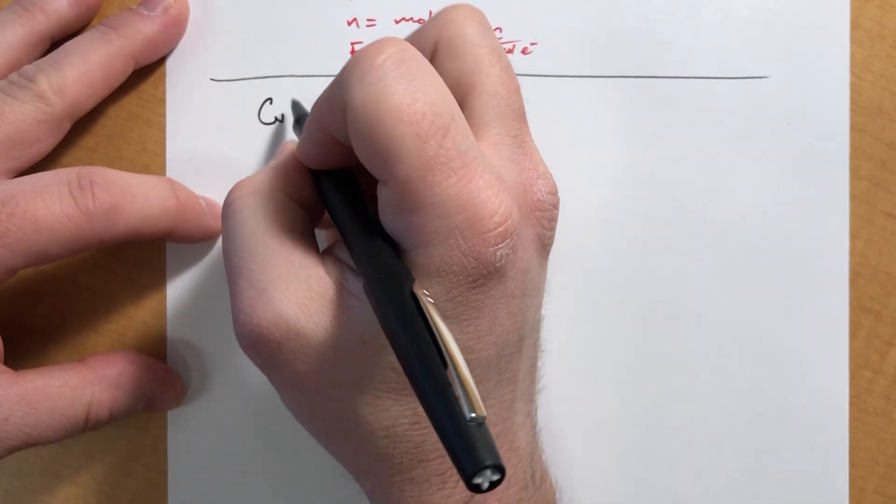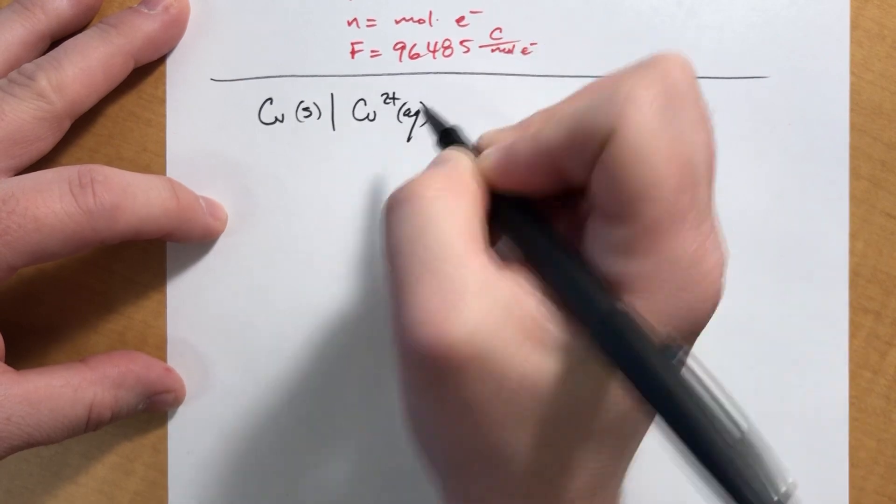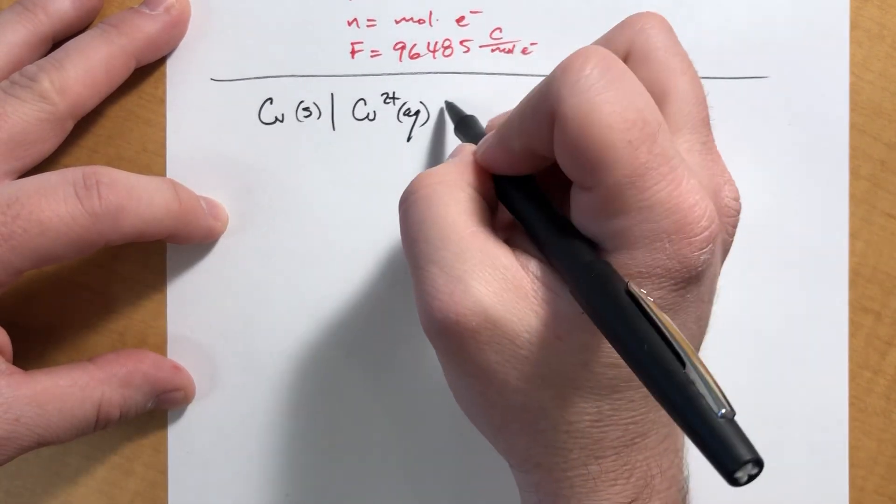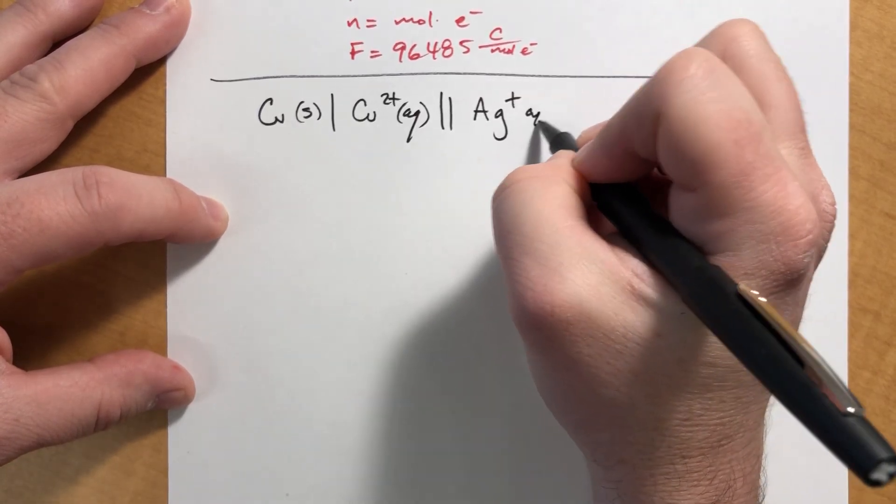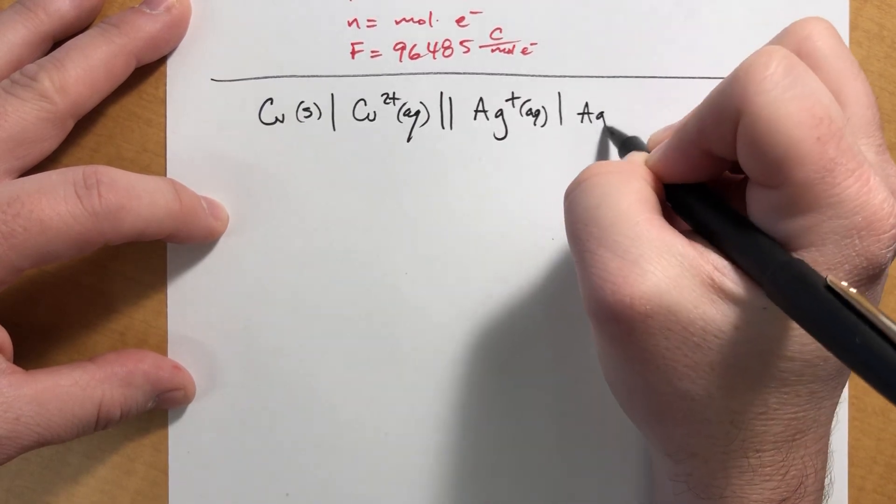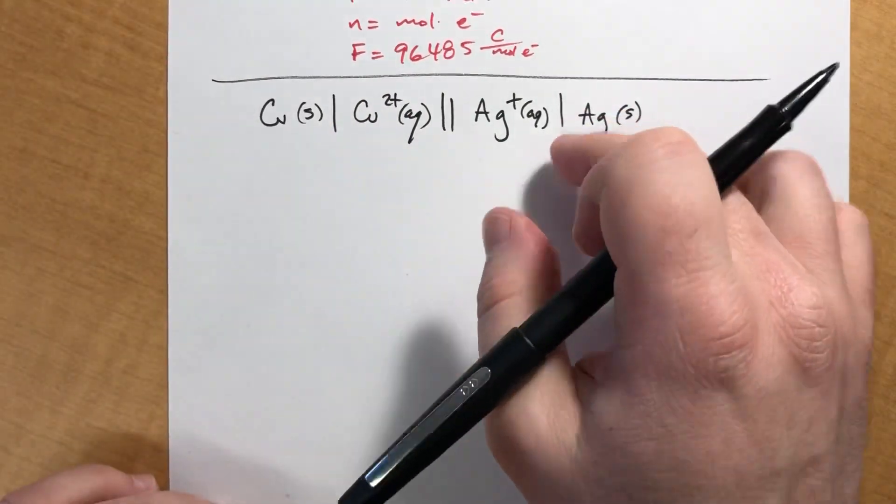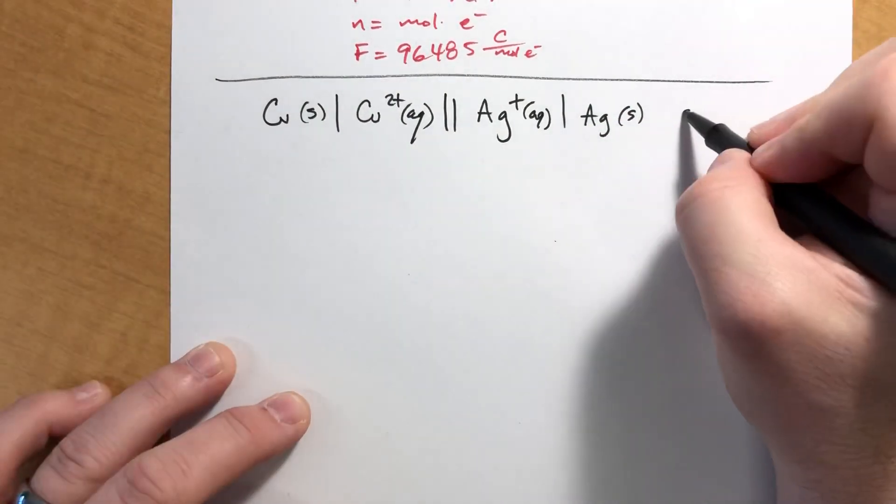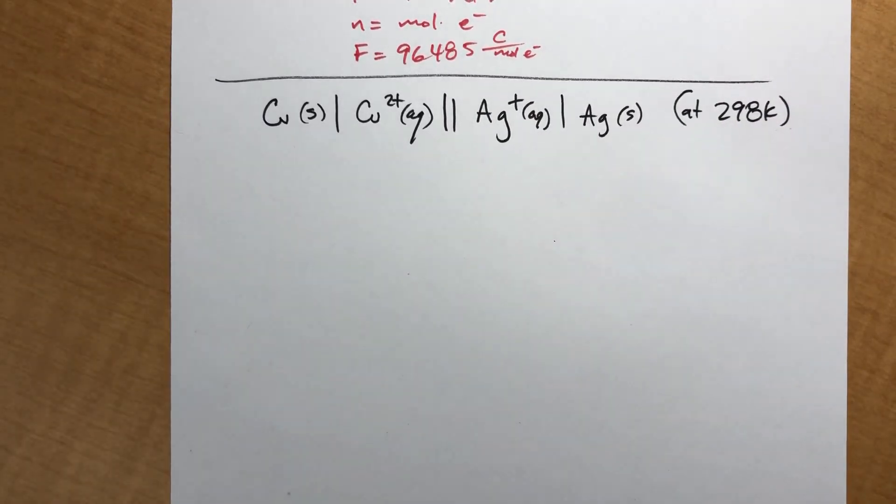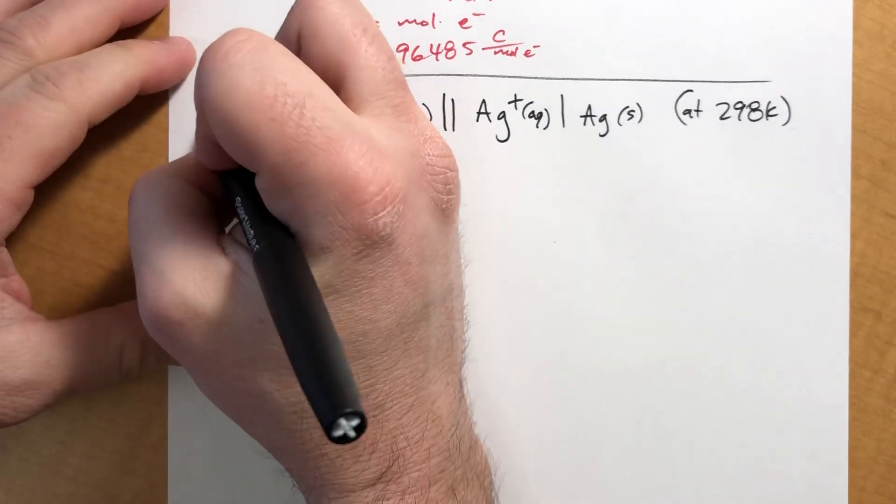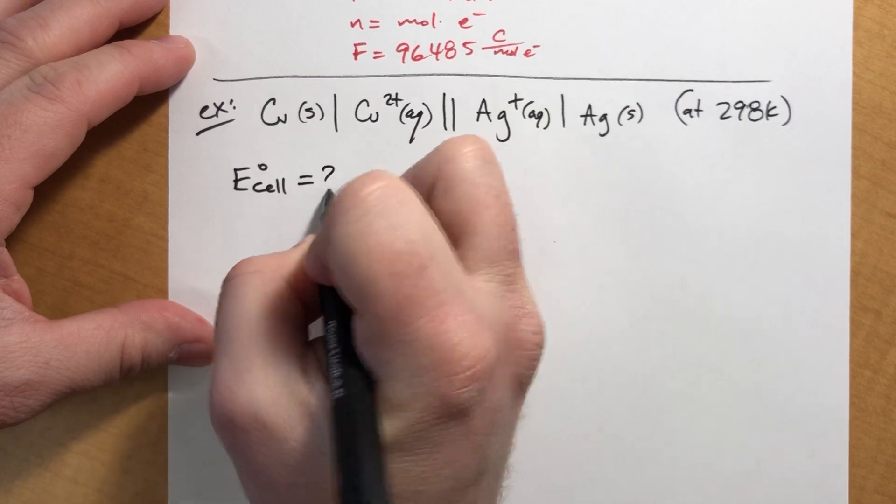Let's try an example where we do all of this stuff. Let's say we have this half reaction. So we have copper as an electrode in a copper solution separated by this, and we have silver as the other half reaction. The thing that is lower on the activity series will probably be the one on the right. And let's assume this is at standard condition, so 298 Kelvin. So let's first of all solve for the cell potential.